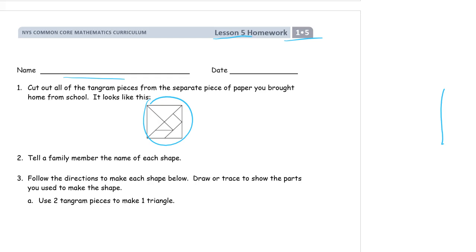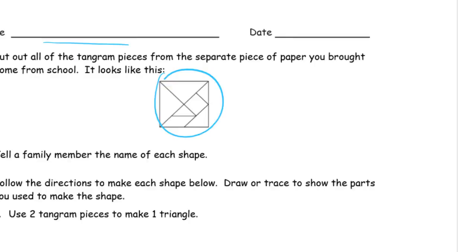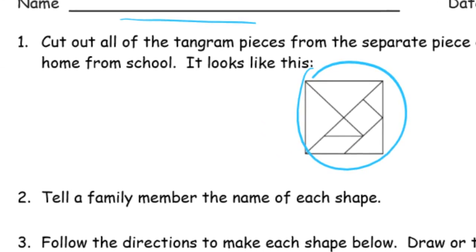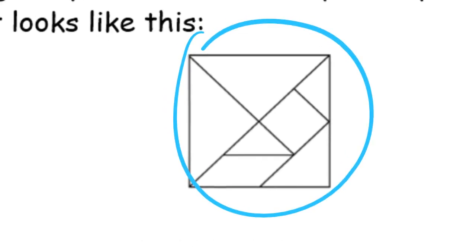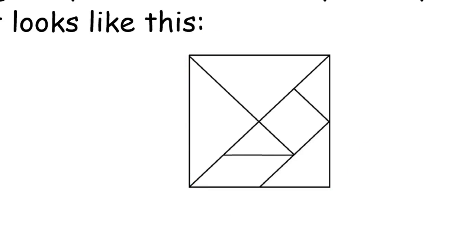So cut them out and it says tell a family member the name of each shape. We have triangles. Most of these are triangles. There's a square. And right here this guy is a parallelogram.